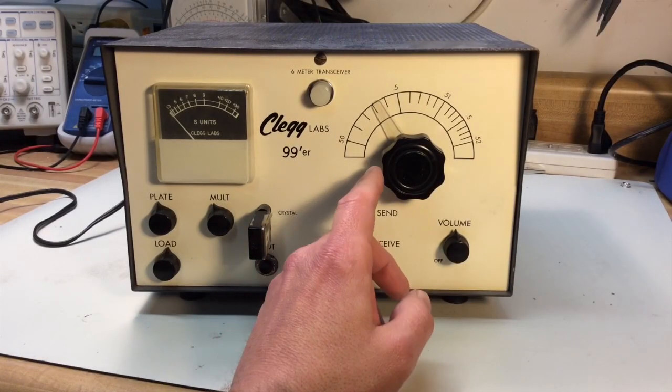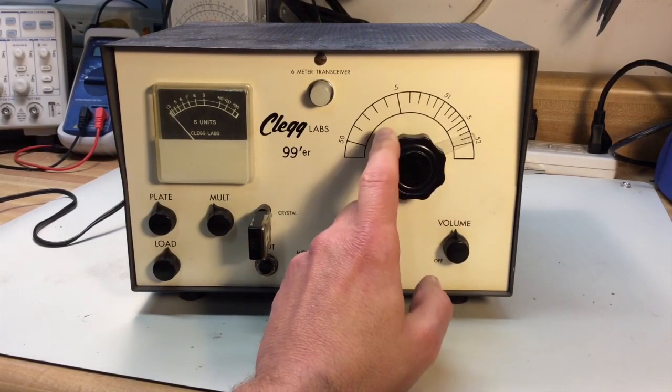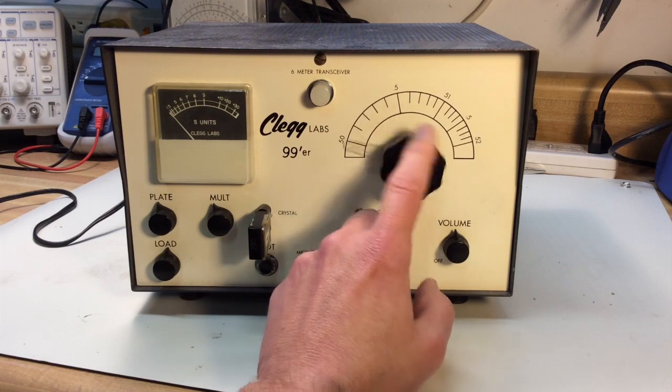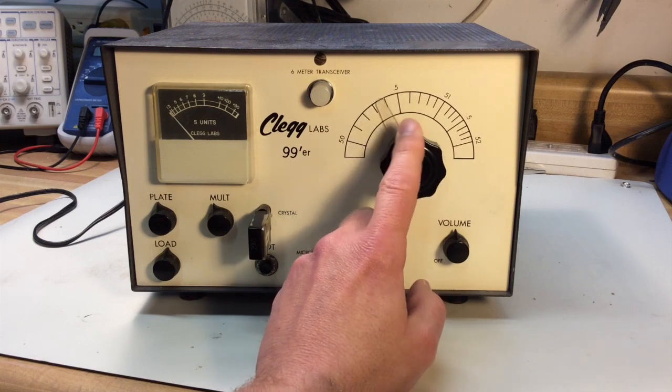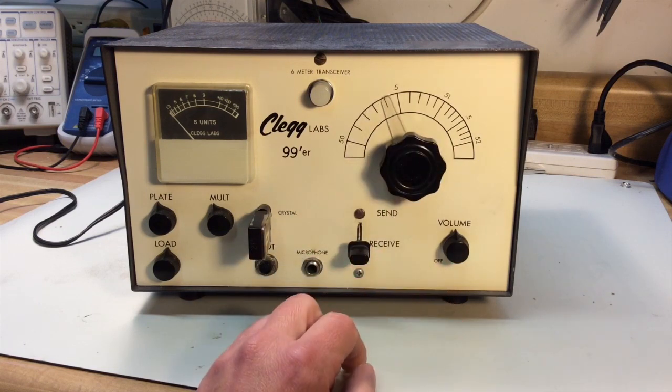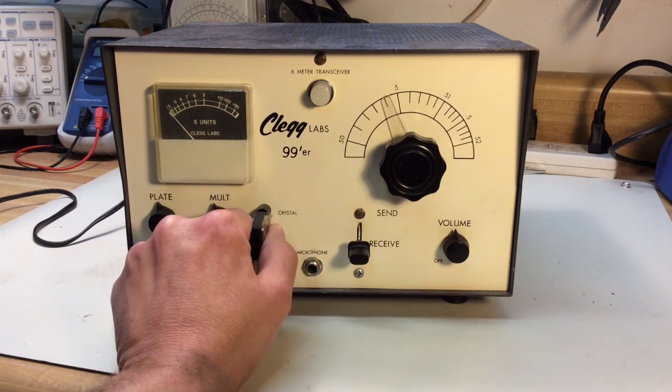The Clegg 99'er was new on the market in the early 1960s, sold for about $140 at the time. It covered the lower 2 MHz portion of the 6-meter ham radio band.